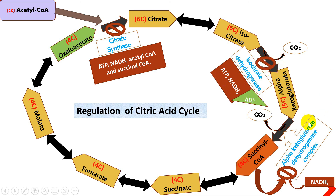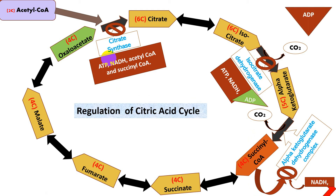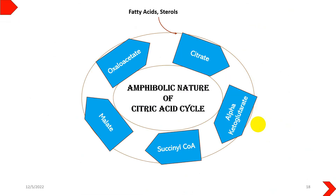High levels of ATP and NADH also have an inhibitory effect on isocitrate dehydrogenase. Additionally, high NADH levels inhibit alpha-ketoglutarate dehydrogenase. Succinyl-CoA, the product of the alpha-ketoglutarate dehydrogenase reaction, exerts product inhibition on that same enzyme as well as on citrate synthase. Low ATP or low ADP levels also have an overall inhibitory effect on the citric acid cycle.